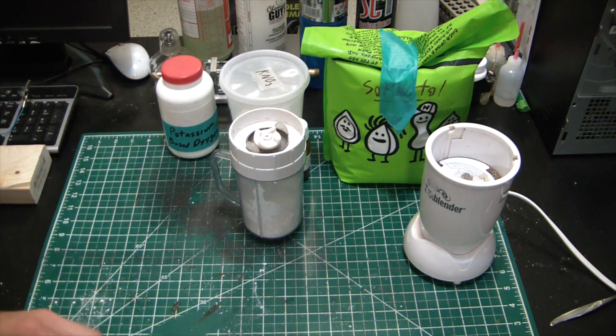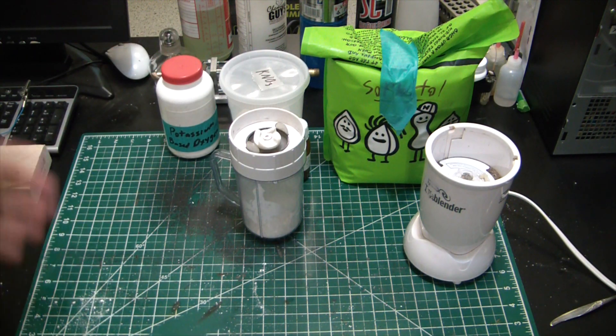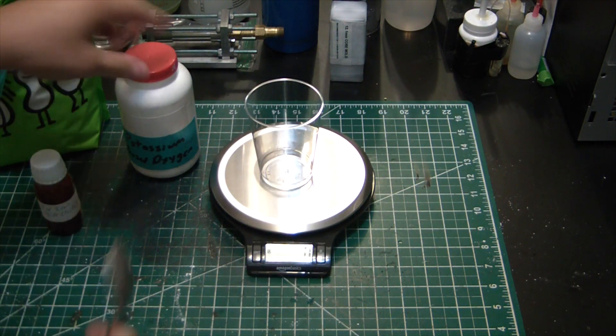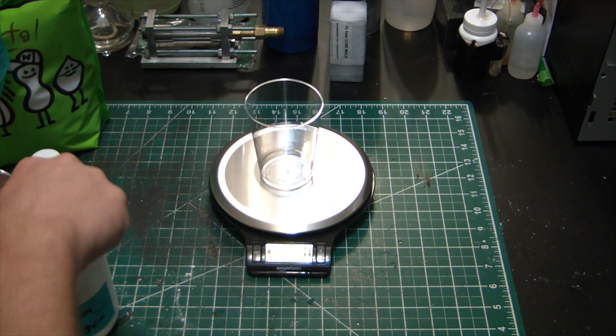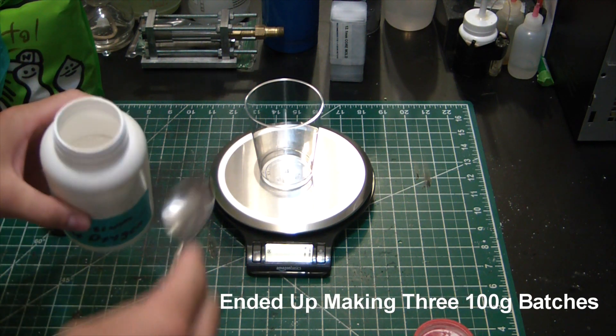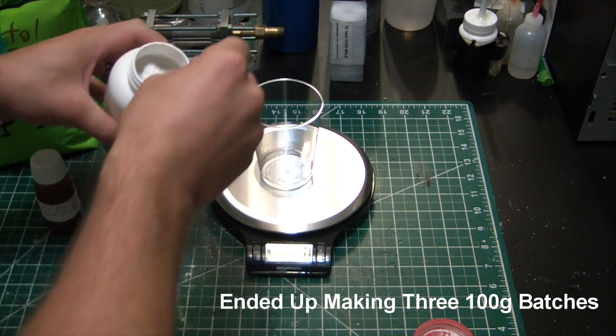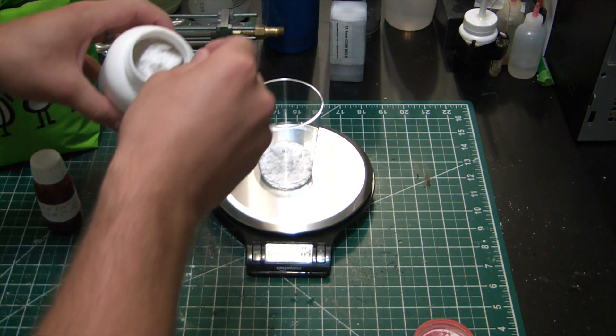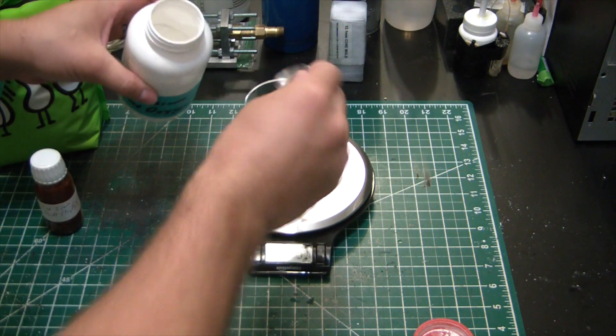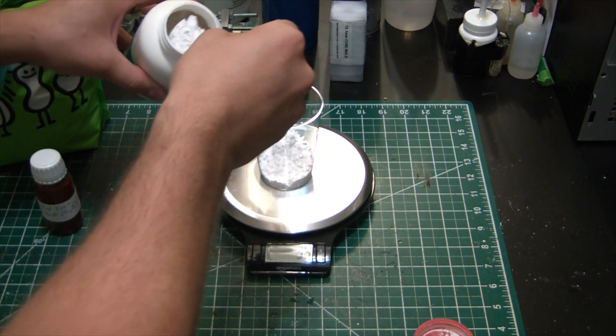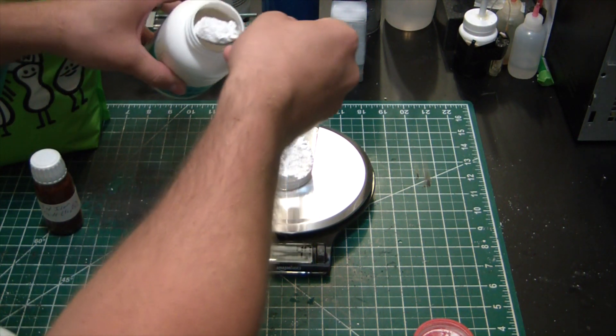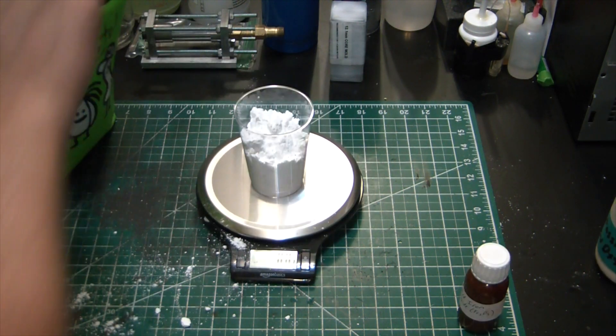I'm going to measure out the ingredients. I'm going to do a hundred gram batch, hopefully that's enough. We'll see how a hundred grams looks. It's 65/35 potassium based oxidizer to sorbitol.